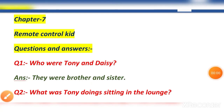Hello my dear students. Today I have brought to you the question answers of chapter 7, given in class 5th Learn Well Communicative English. The name of the chapter is Remote Controlled Kid. I have uploaded a video with a full explanation, and today we are reading the question answers. It has only 12 question answers and they are very simple and easy.